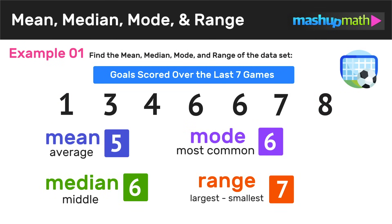Okay, so now we've finished the problem. We just found the mean or average, the mode or most common, the median or the middle, and the range — the difference between the largest and smallest numbers of this data set. And remember, these are all different ways of thinking about and expressing the average value — in this case, the average number of goals scored per game. So now let's go ahead and look at one more example.